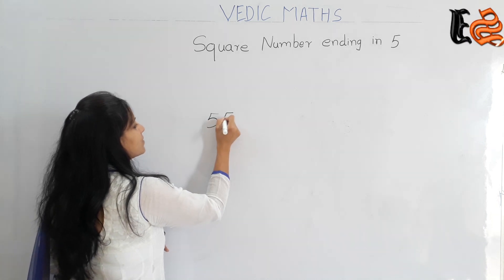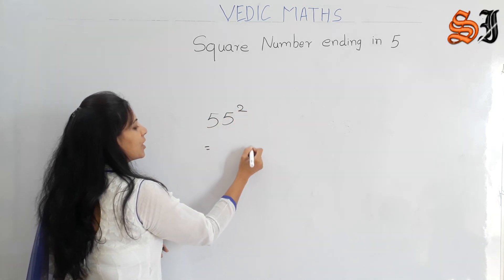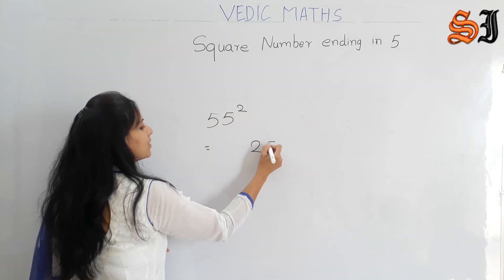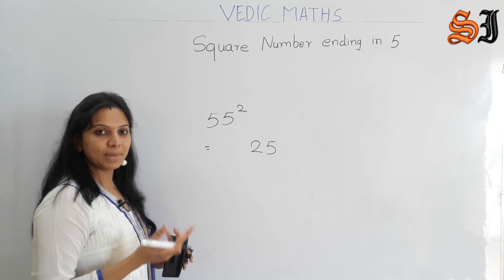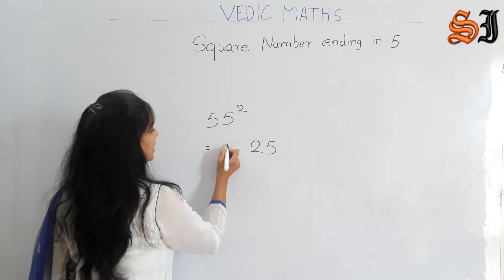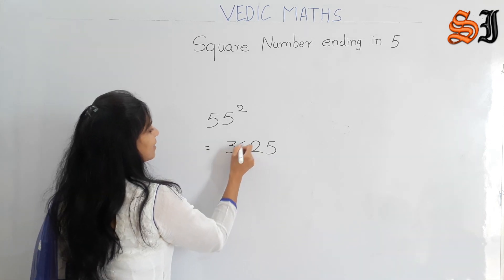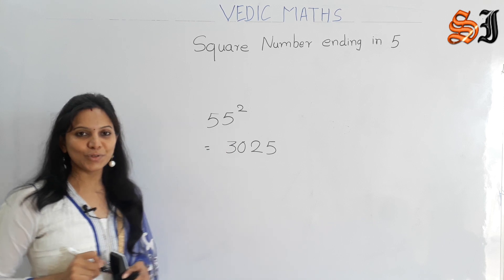For 55 squared: 5 squared is 25, then 5, and the next number is 6. So 5 into 6 is 30, giving us 3025.